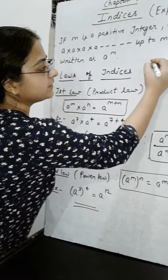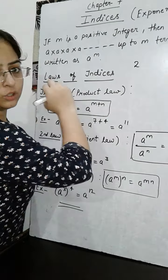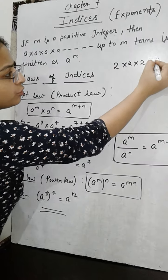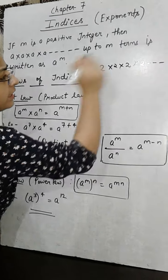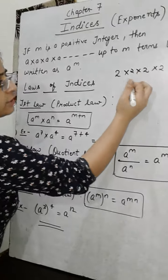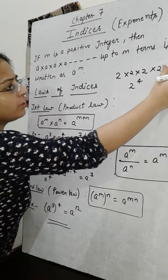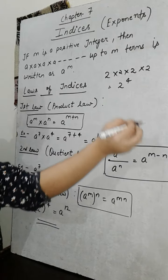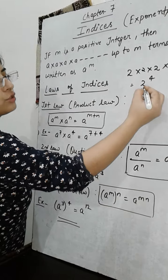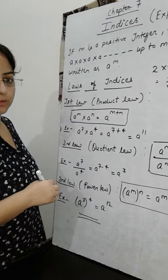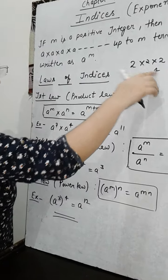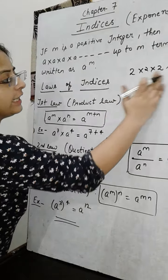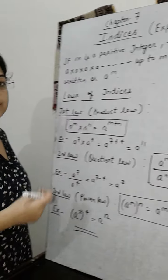If any number is written, suppose we have taken 2 — 2 into 2 into 2 into 2 — then it can be written as 2 raised to the power 4. If 2 is multiplied 4 times, it can be written as 2 raised to the power 4. Here 2 is the base and 4 is the exponent, or index, or power.